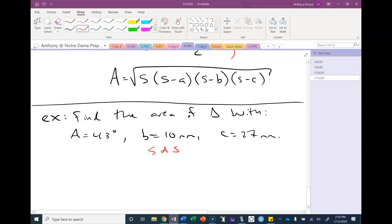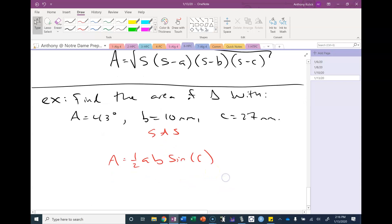For a side angle side situation I can use the one half A B sine C formula. I have one half 10 times 27 times sine of 43 and when I type that into my calculator I get 92.07 millimeters squared.